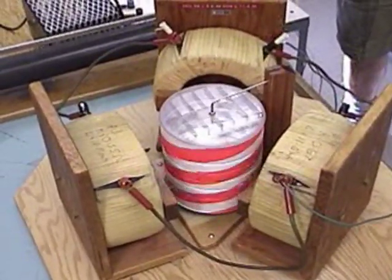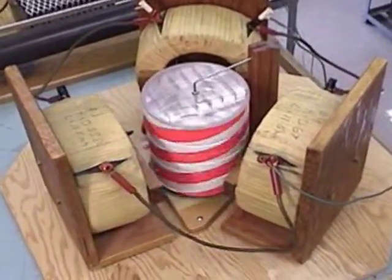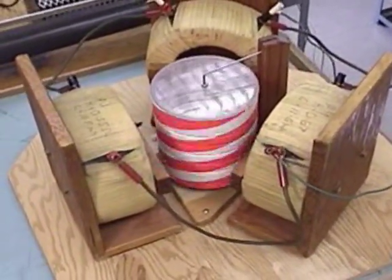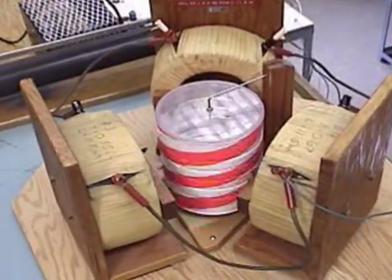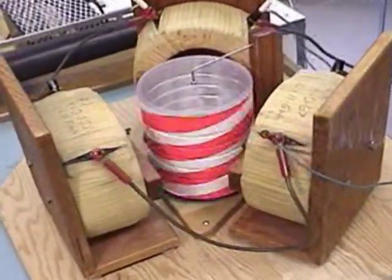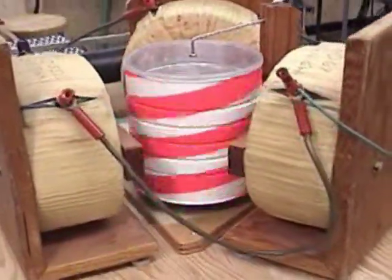It works just the way Tesla predicted it would. The currents produce a rotating magnetic field. The field induces currents in the can and applies forces on those currents. The coffee can rotates.